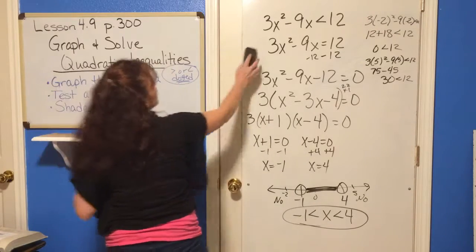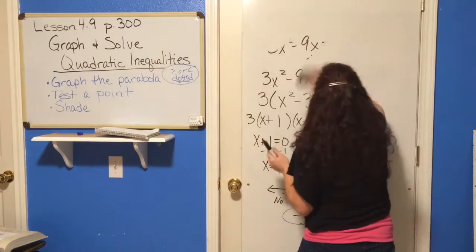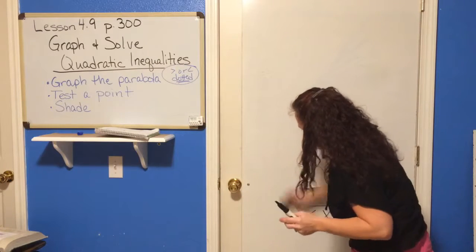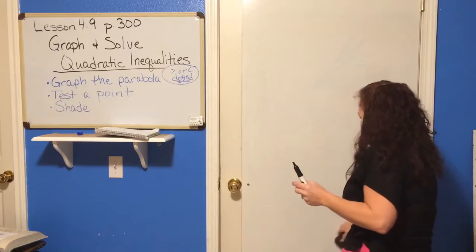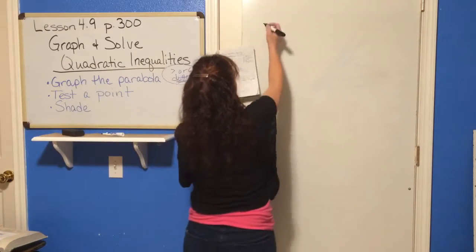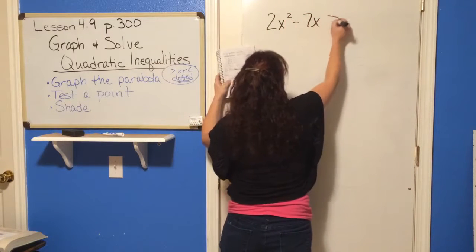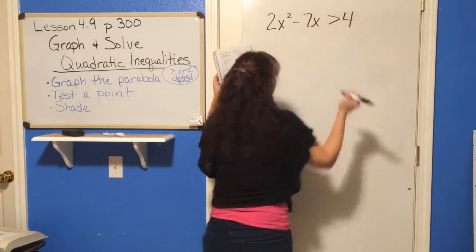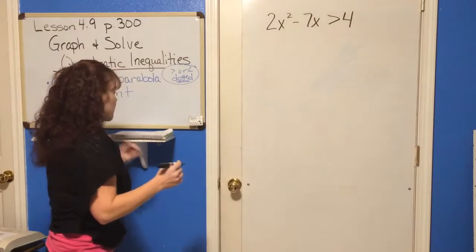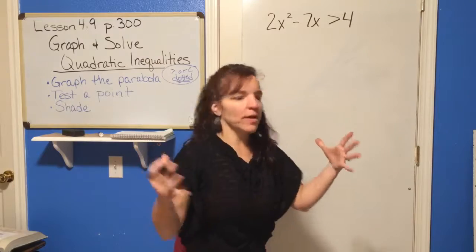Now let's do another one — I want you to try it yourself. Pause the video and try: 2x squared minus 7x is greater than 4. Make sure you're watching the steps and thinking about what I did and why. Then come back and I'll walk you through it.